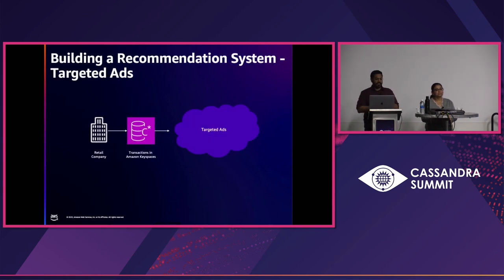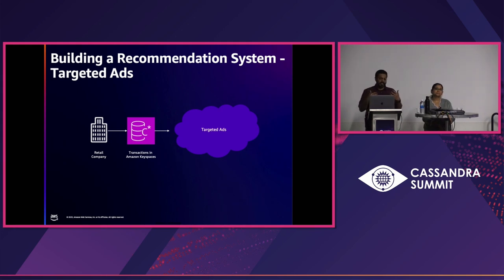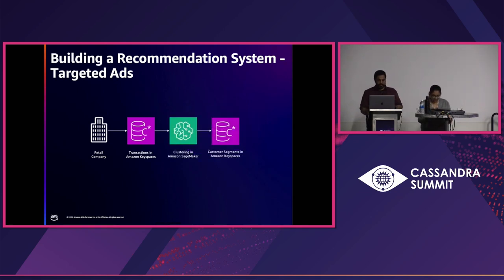So the first demo is about a recommendation system. We have a use case where we are a retail company putting transactions into Keyspaces. It's a very common use case — if you're a retail company, you want to figure out who do I send my ads to? Ads for new customers will be different from customers who have been using your products for a long time, and very different from customers who haven't used your product recently. We're going to use a technique called customer segmenting, segmenting customers into five segments to determine what kind of ads to send them.